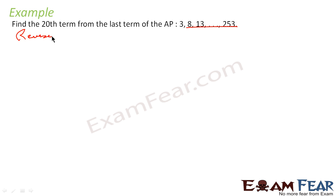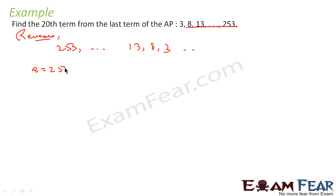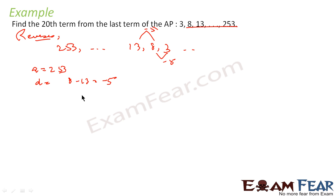If you reverse the AP, it is still an AP. After reversing, I get 353 ... 13. In this reversed AP, a is equal to 253 and d is equal to 8 minus 13, that is minus 5. So we have an AP where a is 253 and d is minus 5.